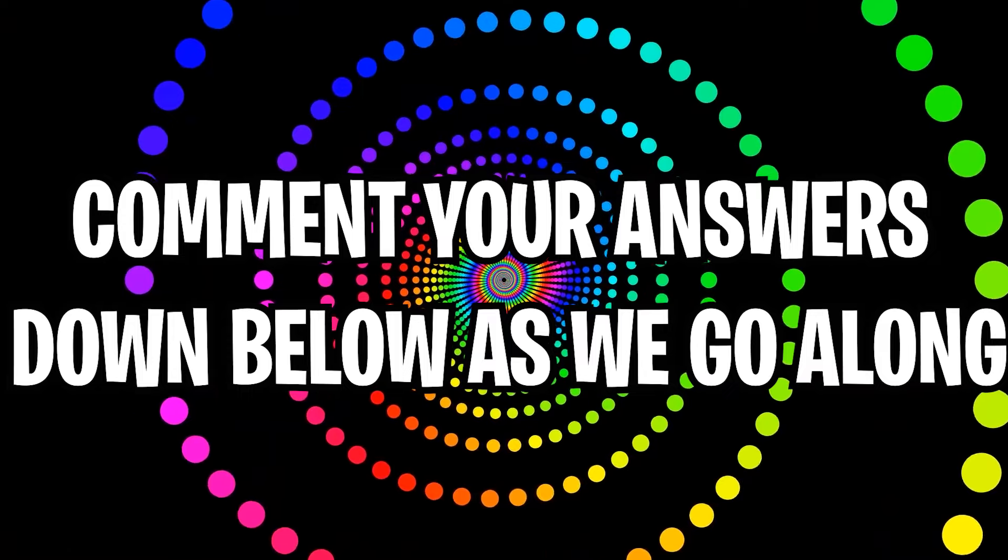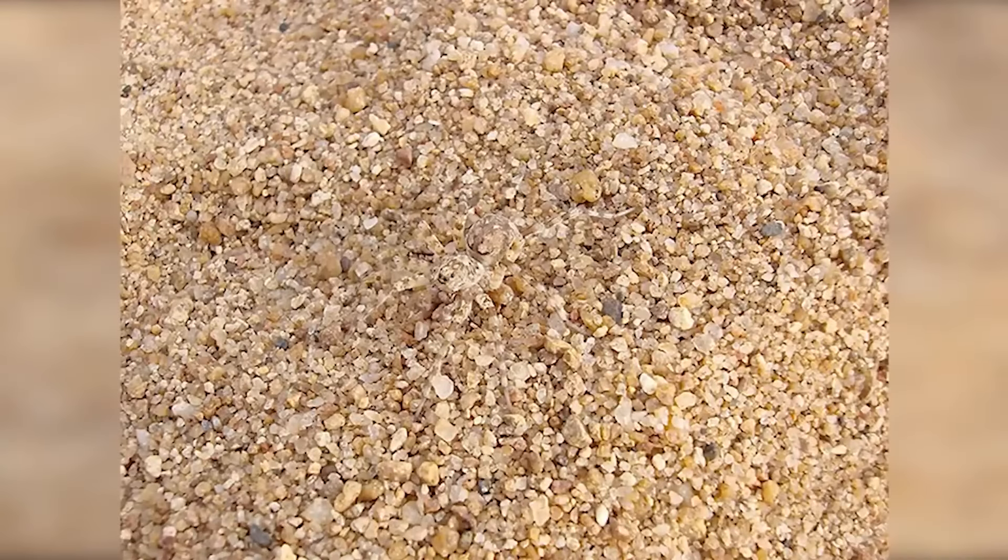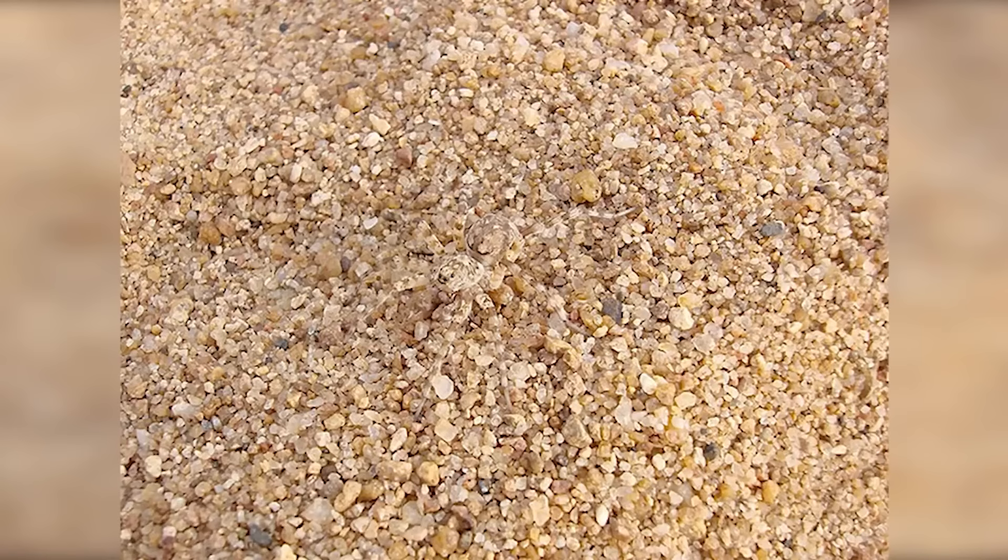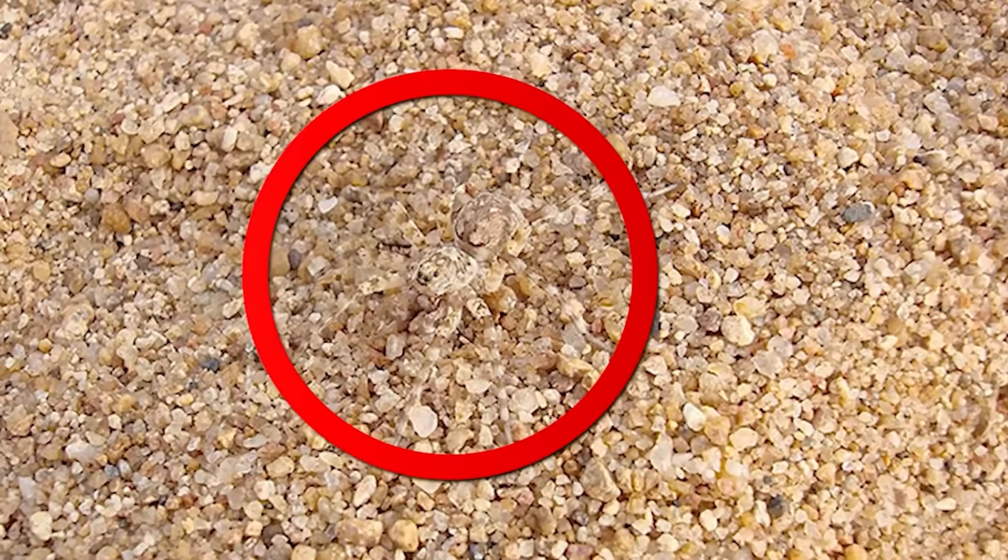What if I told you there's an animal hidden somewhere in this photo? You're probably not gonna believe me, but if you can find the animal in this photo, comment down below what it is. Only people with the best eyesight are actually able to see the animal. The animal hidden in this photo is actually a spider, and it's right here. If you saw this, well done.